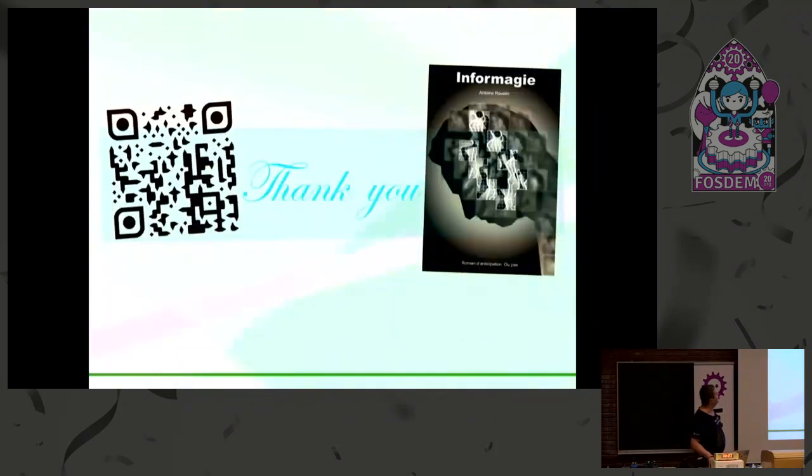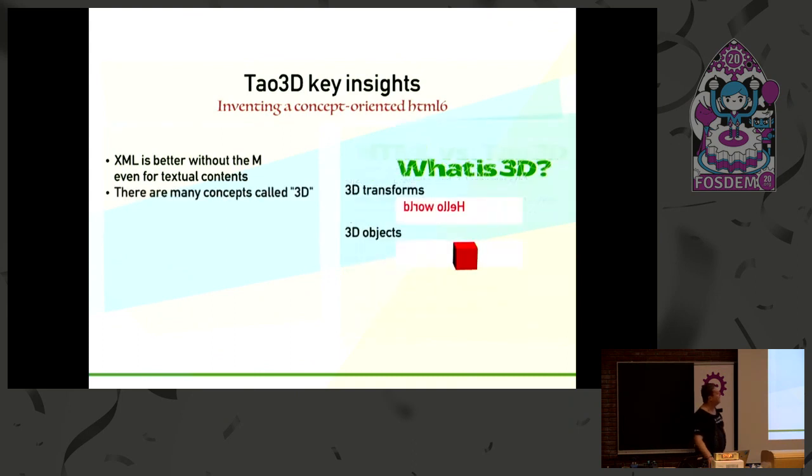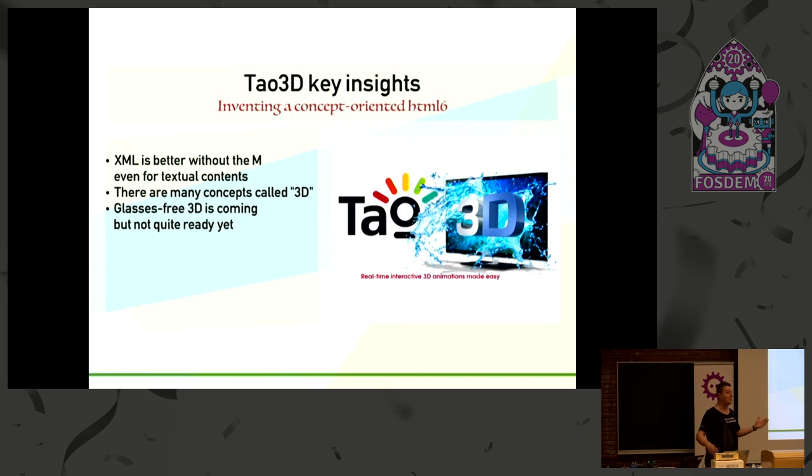Just going to show you what Tao3D looks like. You have dynamic text, you have 3D transforms. Basically my question when I started trying to push the limits about my language was, how do I go beyond standard programming? And I thought, oh, documents, that's a good test. And you see the result. So I hope that this will give you ideas. Sorry, I'm out of time, but I tried to speak fast. Thank you.